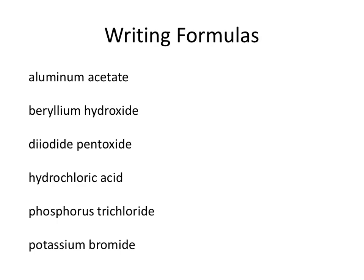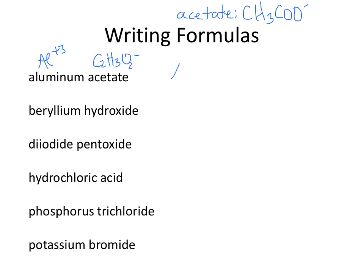We're going to start with aluminum acetate. Aluminum is Al plus 3, and acetate is C₂H₃O₂ minus. Sometimes you'll also see acetate as CH₃COO minus — that's written more in the way the molecule is structured, so think of either as acetate. Since acetate is minus 1 and aluminum is plus 3, I'm going to need 3 acetates: Al(C₂H₃O₂)₃. Make sure you put the parentheses before the subscript.